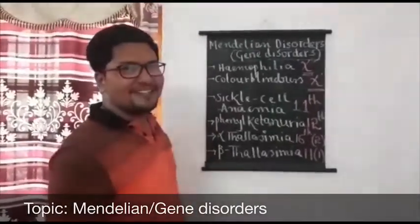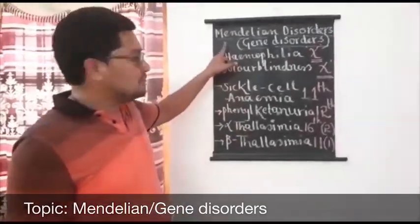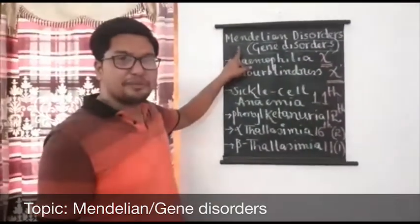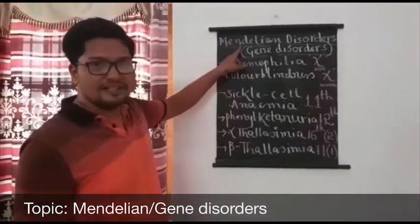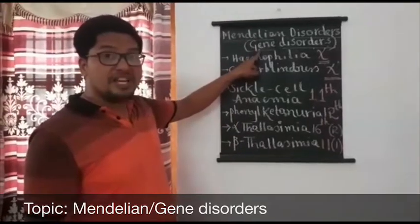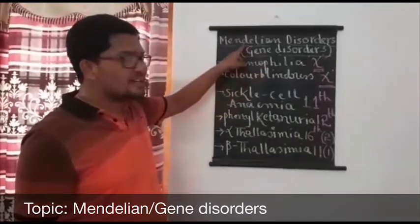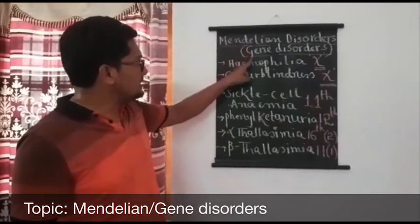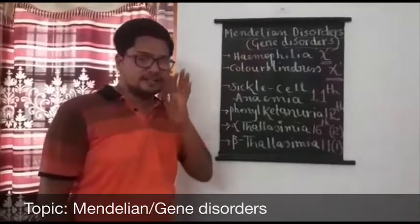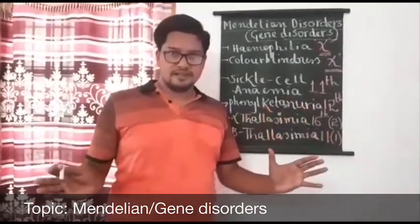Good morning dear students. Today let us discuss one of the most important topics from the second PUC syllabus, from the chapter Principles of Inheritance and Variation. The topic is Mendelian disorders, which are otherwise called gene disorders, because gene is also called a Mendelian factor — so gene disorders are also called Mendelian disorders.